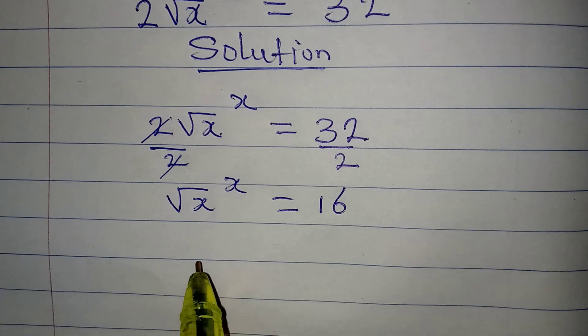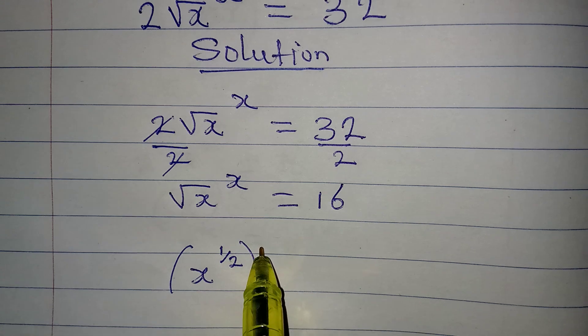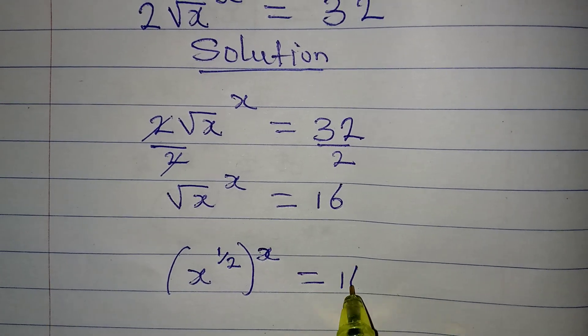Now the next thing is trying to remove this square root from here, and that will give us x^(1/2). The whole of this to the power of x, this is equal to 16.